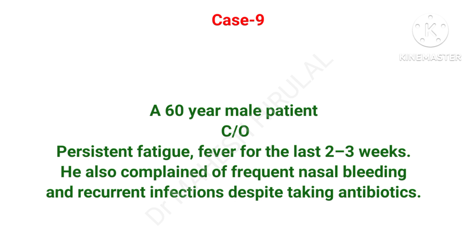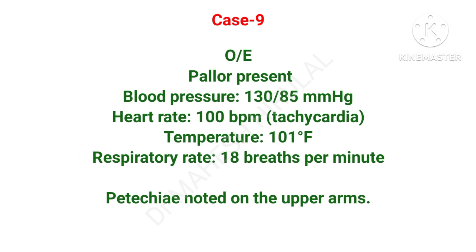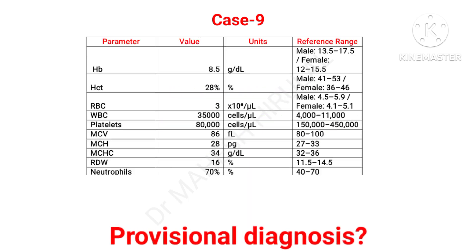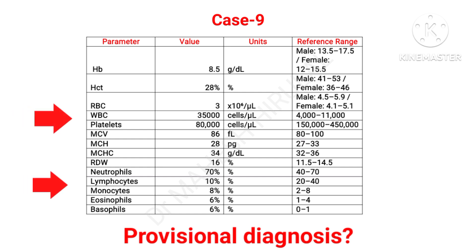A 60-year-old male patient complaining of persistent fatigue, fever, frequent bleeding, and recurrent infections. On examination pallor is present, temperature is 101°F, tachycardia is noted, and respiratory rate is normal. Petechial hemorrhages were noted on the upper limbs. In CBC, there is an extreme rise in WBC count of more than 35,000, reduced platelet counts, and many variations in the differential count. Guess the probable diagnosis.